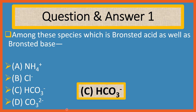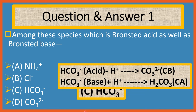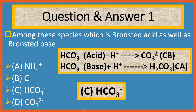Answer is C, HCO3-. According to the Bronsted concept, an acid is a hydrogen-containing species that can give up a proton, and a base is a species which can accept a proton. An acid is therefore a proton donor and a base is a proton acceptor. Here HCO3- acts as an acid and donates a proton, transferring to CO3-, which is the conjugate base of HCO3- acid.